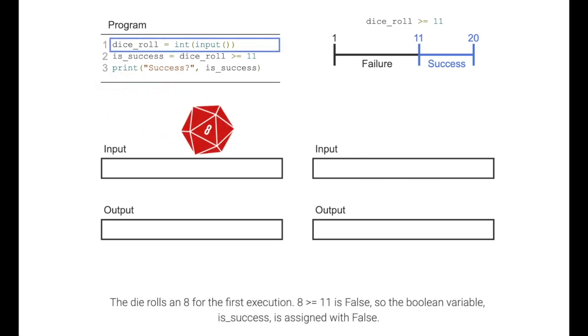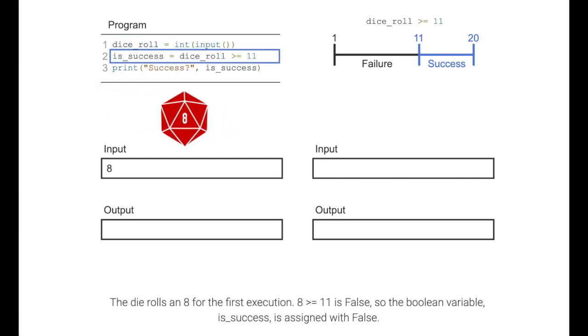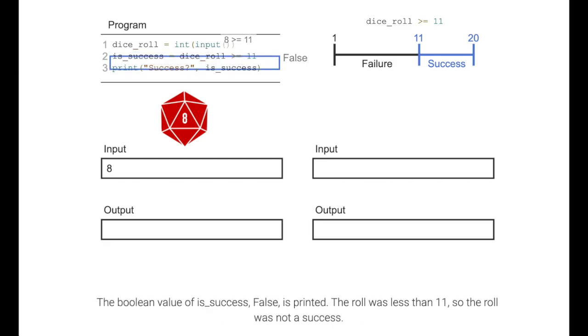The die rolls an 8 for the first execution. 8 greater than or equal to 11 is false, so the Boolean variable is_success is assigned with false. The Boolean value of is_success, false, is printed. The roll was less than 11, so the roll was not a success.